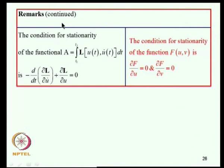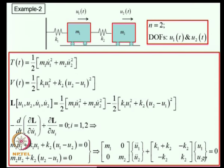Just as the condition for stationarity of a function F(u,v) is ∂F/∂u = 0 and ∂F/∂v = 0, the condition for stationarity of a functional is the Lagrange equation. Consider a 2-DOF system with masses M₁ and M₂, springs K₁ and K₂, and degrees of freedom U₁ and U₂.